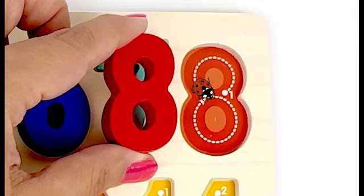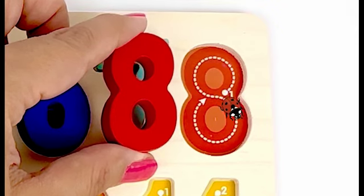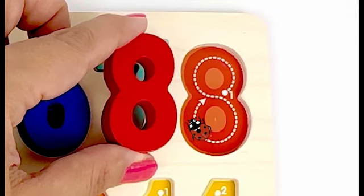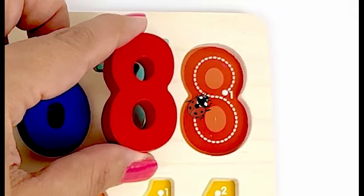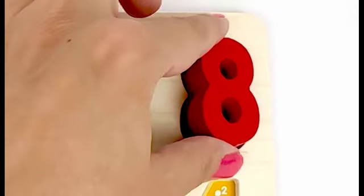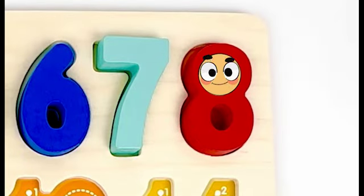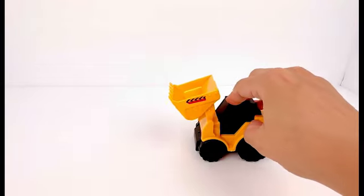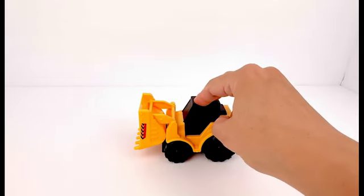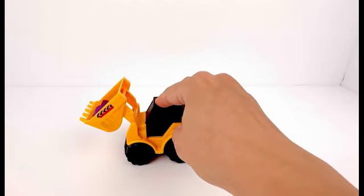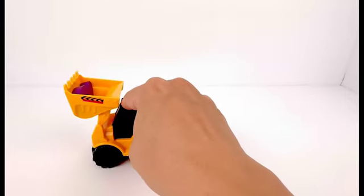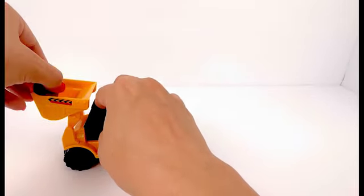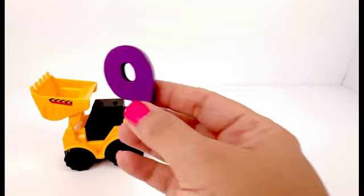Now let's trace number eight with our ladybug. Number eight is like two circles stacked on top of each other. Number eight is being silly. A yellow and black tractor! I love playing with cars, how about you? Look, I think the tractor found something for us. Yay, it's our number nine.